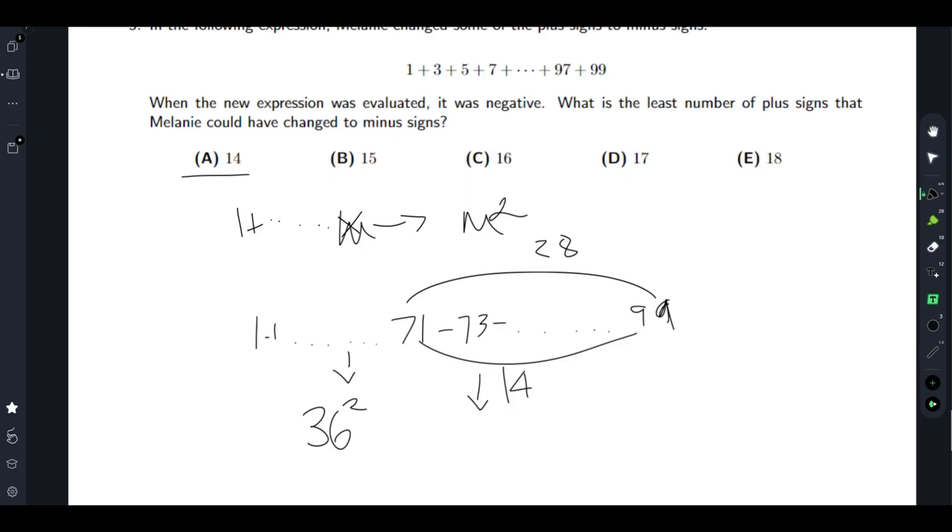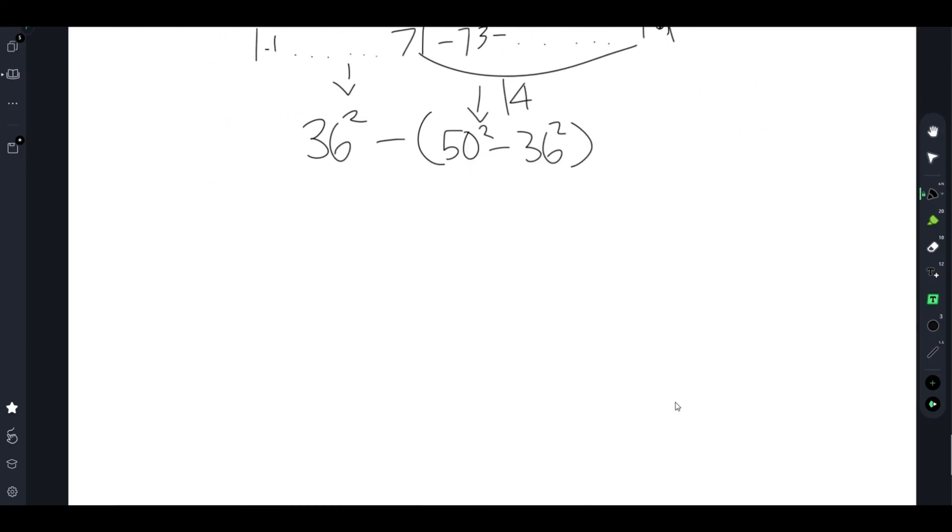And this is 50 squared minus 36 squared, so we get 2 times 36 squared minus 50 squared. We know 50 squared is 2500, and we know that 36 squared is 1296 times 2, which is obviously greater, so this is still positive.